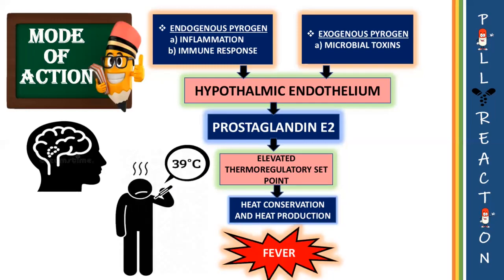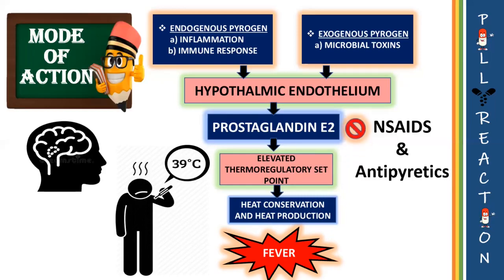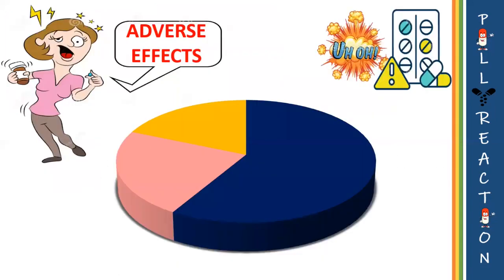Now we understand the exact mechanism of fever. Antipyretics inhibit PGE2, thereby preventing fever. Moving on, some of the adverse reactions of paracetamol include nausea, vomiting, and rashes.